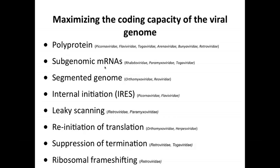Some viruses make subgenomic mRNAs — multiple mRNAs from a single template — so that's another way to make many proteins. You could have a segmented genome like influenza and reoviruses, allowing you to make 8, 10, or 12 different proteins, one per segment. You could also do internal initiation; we just saw in the cricket paralysis virus genome how you can get two independent initiation sites on a single mRNA with an IRES.